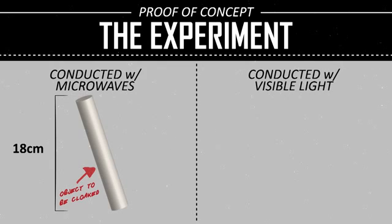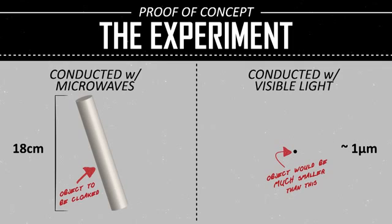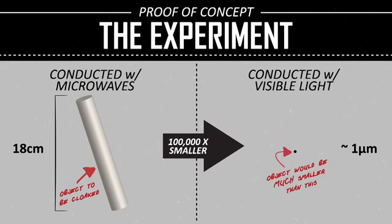To conduct the same experiment in the visible spectrum, the cylinder would have to be about one micrometer long or 100,000 times smaller. For scientific purposes, utilizing the microwave spectrum is much more practical.